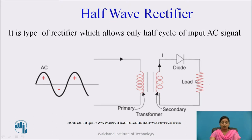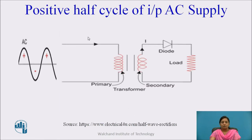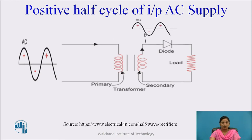The load resistance is connected across the secondary, and the output is taken across this load resistance. In series with the secondary winding, a diode is connected. A diode is a two-terminal device which allows current only in one direction and blocks current in the other direction. The input AC supply is given to the primary of the transformer, and the step-down transformer converts the high voltage AC supply into low voltage AC supply, with frequency remaining the same.